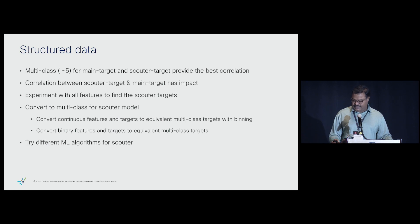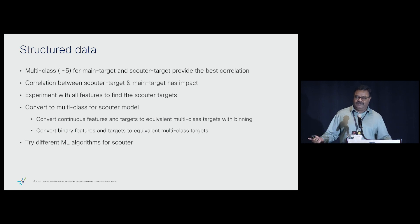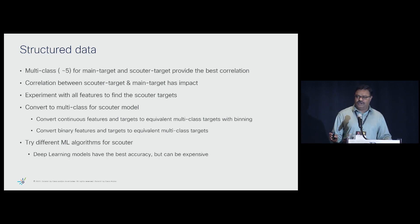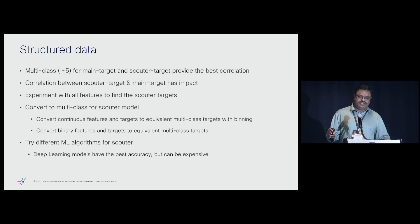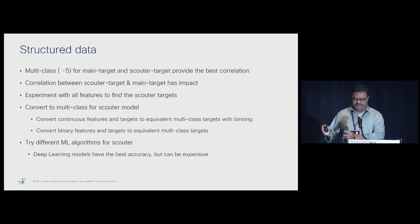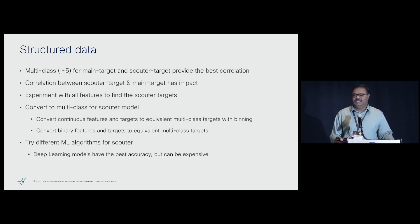For Scouter models, we want to try different algorithms — naive Bayes, random forest, deep learning models. We found that deep learning models give the best accuracy for Scouters, but deep learning models are also expensive. Remember, the Scouter model is just a monitoring model, not your main model, so you don't want it consuming a lot of resources and effort in training. So it works, but the question is whether that's what you want to use given the cost implications.